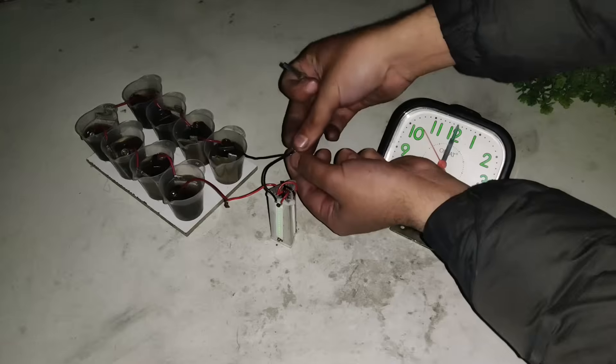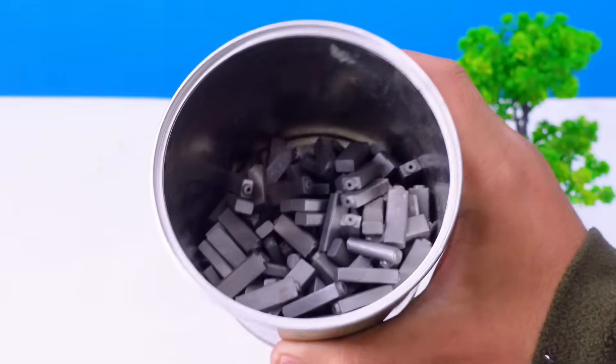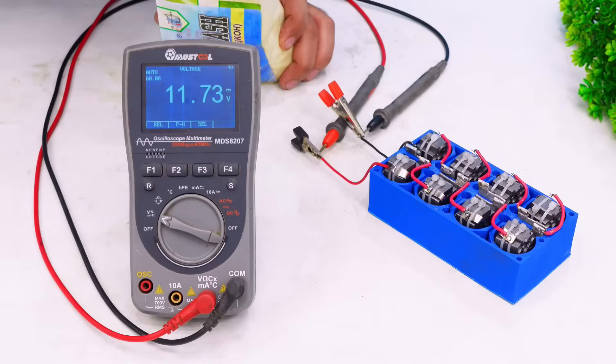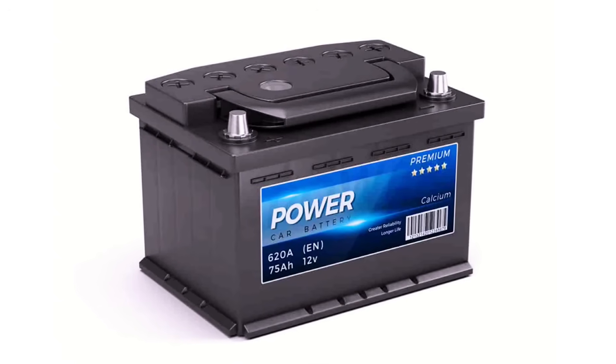Today I will be making an aluminum air battery that uses carbon brushes as cathode and can produce an output of around 12 volts DC like any normal battery.